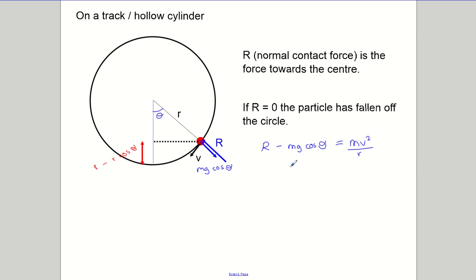Again, when you get past 90 degrees, cos theta goes negative, the negative becomes positive, and the same equation works whether you're in the bottom half or top half of the circle. Same rules as with a string: if R equals zero, you're no longer on the track, meaning you're free-falling and not following a circular loop. If at any point R equals zero, you've lost your circle and you're just falling like a projectile.